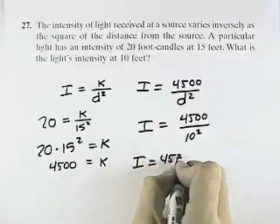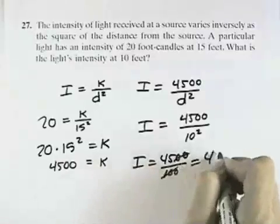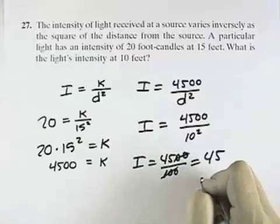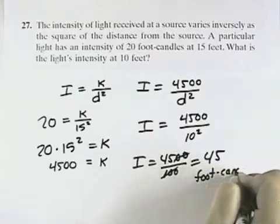So I will equal 4,500 divided by 100, canceling the 100 equals 45. So we have 45, and in this case they're called foot-candles of intensity.